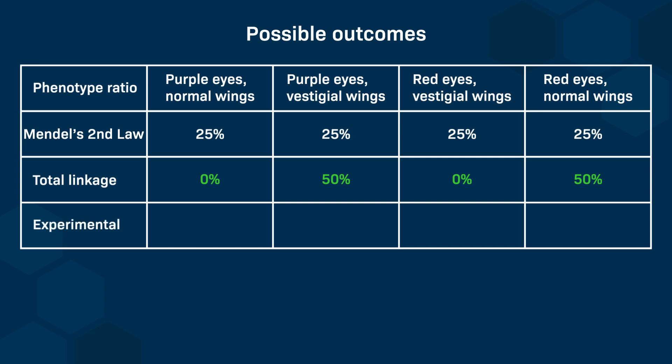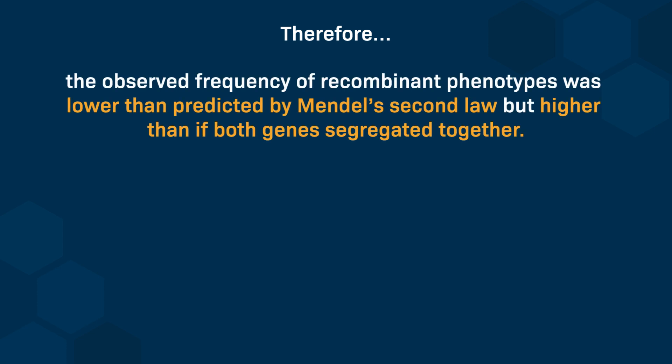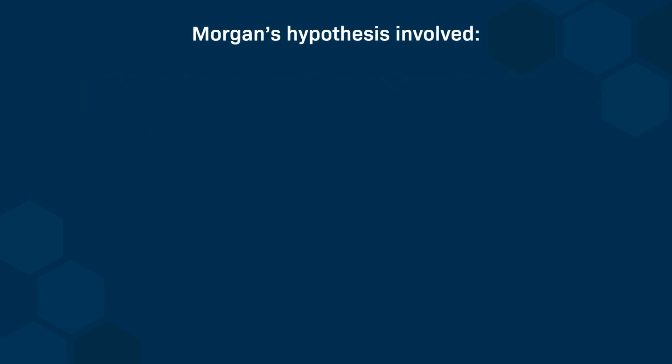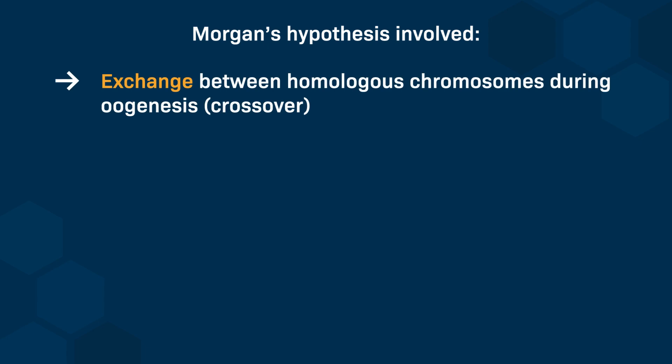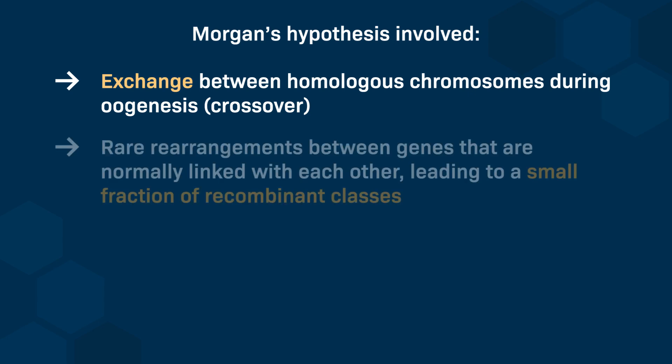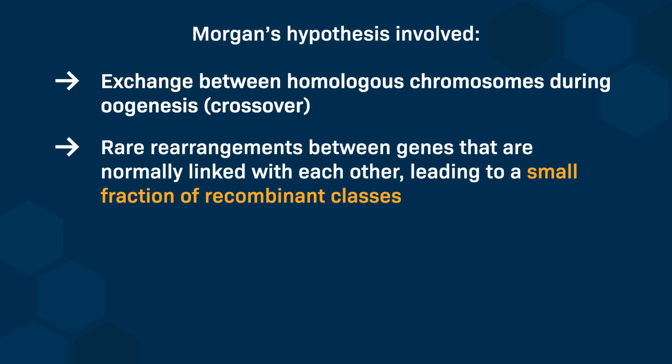However, Morgan's research group observed something in between during their experiments. They observed that 40% of each parental phenotype and 10% of each recombinant class were present. The conclusion is that the observed frequency of recombinant phenotypes was lower than predicted by Mendel's second law but higher than if both genes segregated together. Morgan's hypothesis was that an exchange had happened between homologous chromosomes during oogenesis, which he called a crossover, resulting in rare but not impossible rearrangements between normally linked genes.